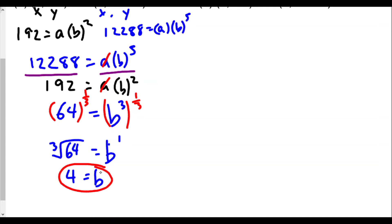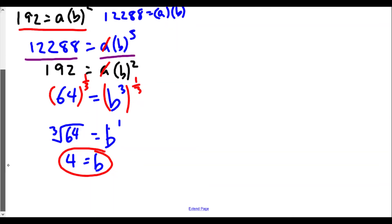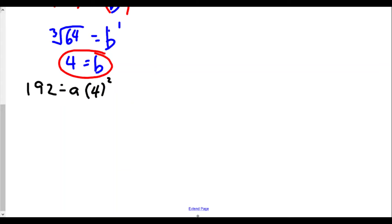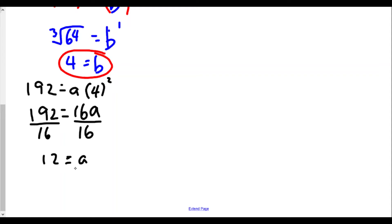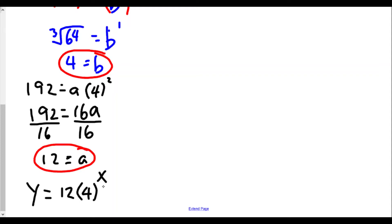Now we'll plug b into one of the equations — probably 192 equals a times b squared, because it's an easier number to work with. So 192 equals a times 4 squared. Now 4 squared is 16, so 192 equals 16a. Dividing both sides by 16: 192 divided by 16 gives us a value of 12. So our a value is 12, our b value is 4, and the equation is y equals 12 times 4 to the x power. We're just plugging the values of a and b back into the form.